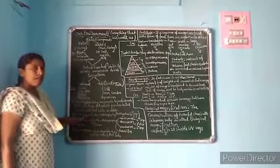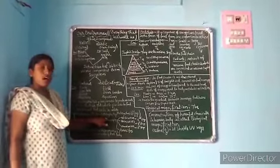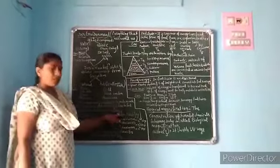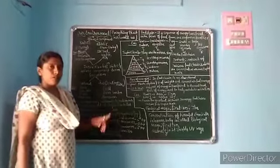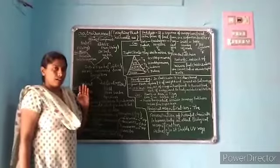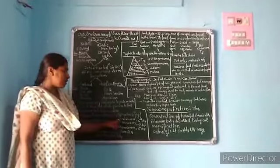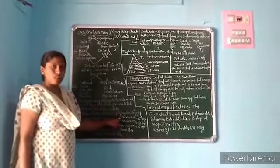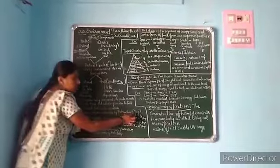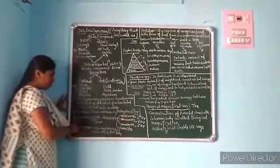Producers means plants. Plants are autotrophs — autotrophs prepare their own food using sunlight, nitrogen, and soil minerals through photosynthesis. That is why producers form the first trophic level of the food chain.